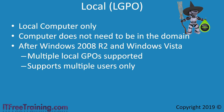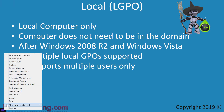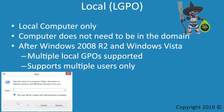To have a look at the local group policy on this computer, I will right click on the start menu and then select run from the menu. If I enter in gpedit.msc, this will run the local group policy editor.